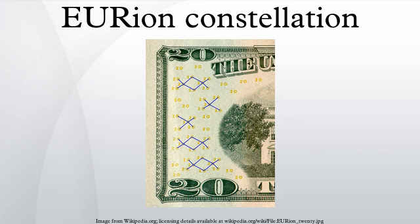Research shows that the Orion Constellation is used for color photocopiers but probably not used in computer software. However, there have been reported incidents where Adobe Photoshop doesn't allow the editing of banknotes upon detection of the Orion Constellation.